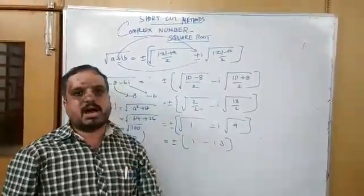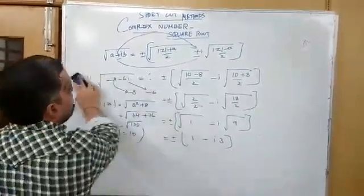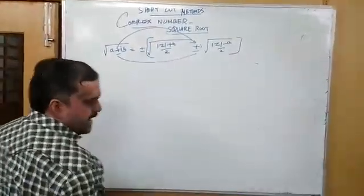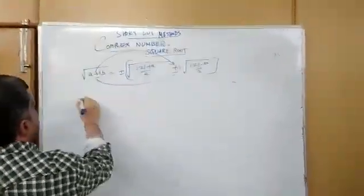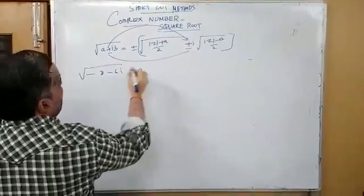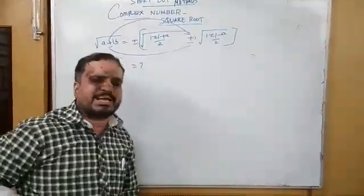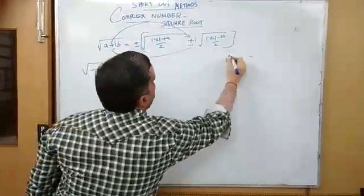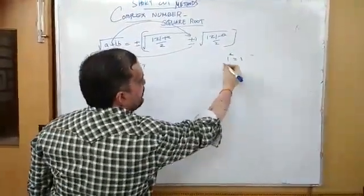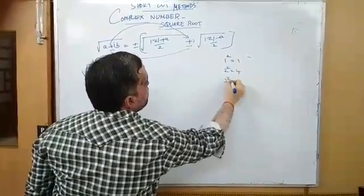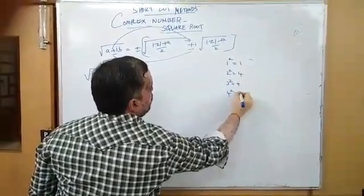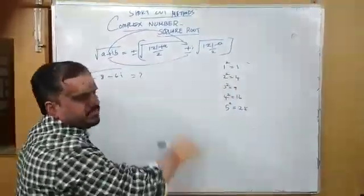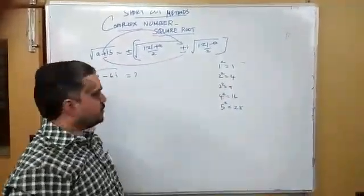Another method — same question. I can use another method for finding the square root of minus 8 minus 6i. For this method, we need knowledge of square numbers: 1 squared equals 1, 2 squared equals 4, 3 squared equals 9, 4 squared equals 16, 5 squared equals 25. These are the things we need first, before finding the square root.